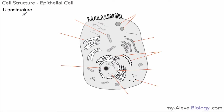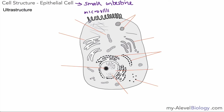We're looking at the ultrastructure of a particular kind of cell called an epithelial cell that comes from the small intestine. The first thing to notice is these structures along the top — these are microvilli, little finger-like projections that stick out from the cell. Their job is to maximize surface area so the cell can absorb as much of the substances within the small intestine as possible. There are lots of other structures we need to know about, which we'll look at in more detail in the next slides.